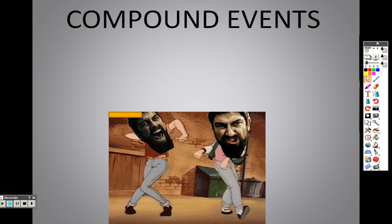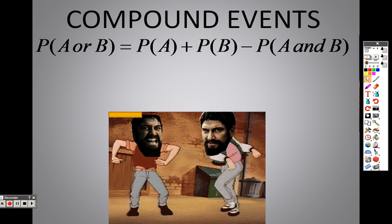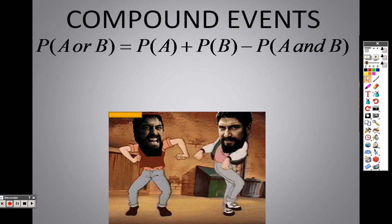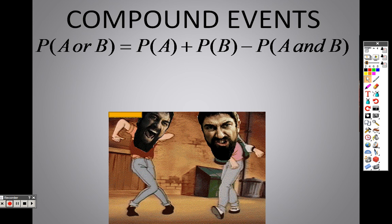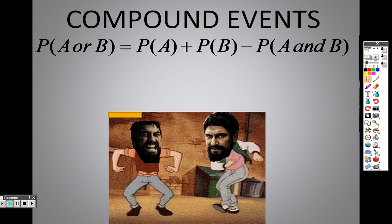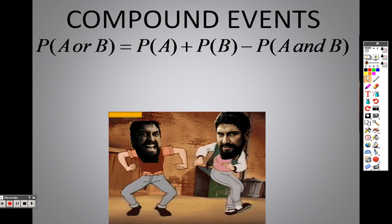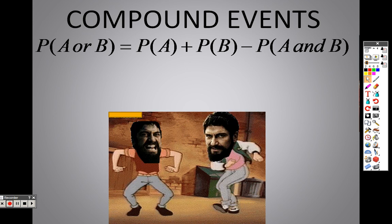So compound events. When we're talking about compound events, we're talking about or. Or is the key to this. When you hear the word or, when they are speaking in a problem, it says, what's the probability of getting an ace or a king? The key word there is or. That's how you know we're going to add.